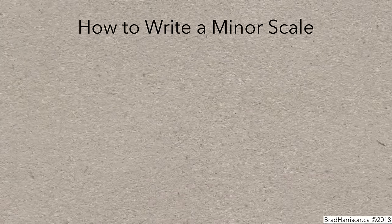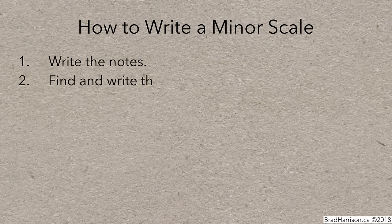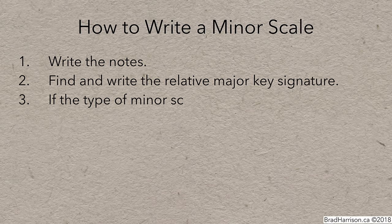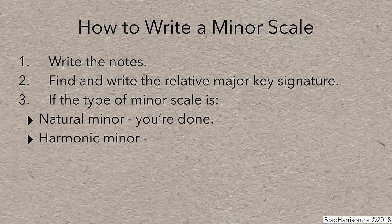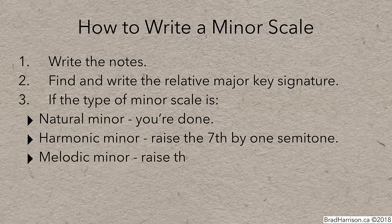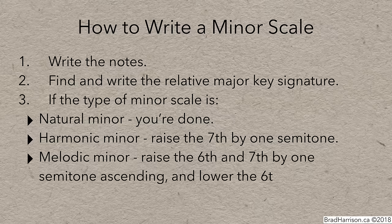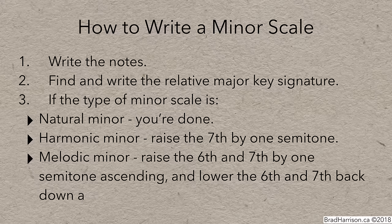To write a minor scale: write the notes, then find and write the relative major key signature. If it's natural minor, you're done. If it's harmonic minor, raise the seventh note by one semitone. If it's melodic minor, raise the sixth and seventh by one semitone ascending, and lower them back down a semitone descending. And that's minor scales. Be sure to like, comment, share, and subscribe for more videos. Thanks for watching!